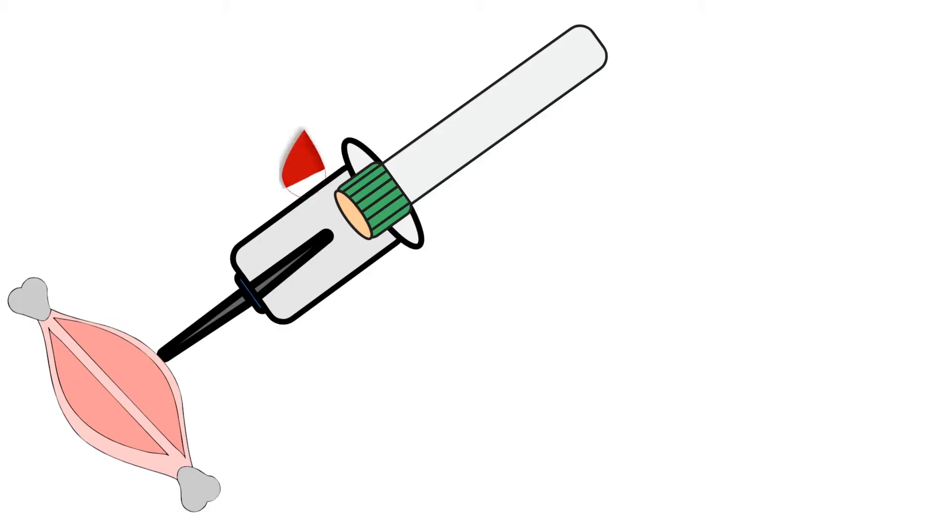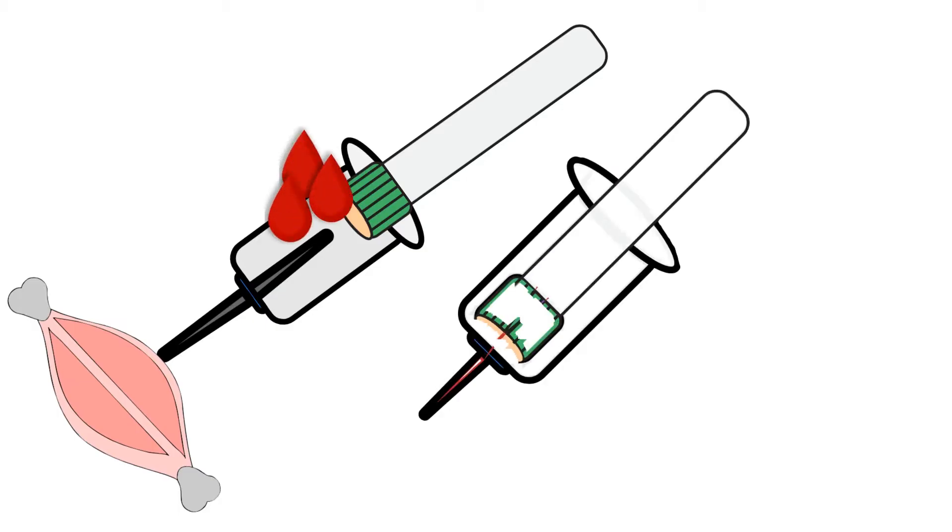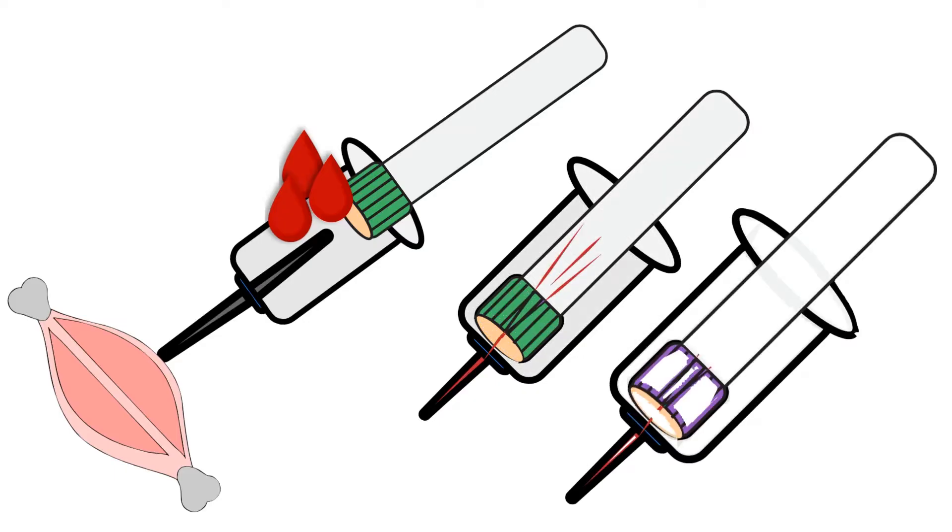As you fill up the tube with blood, the blood mixes with the additive and gets onto the back end of the needle, which will go into the next tube and mix with the blood and additive in that tube.